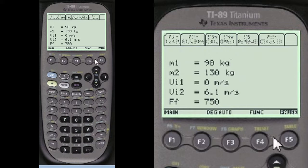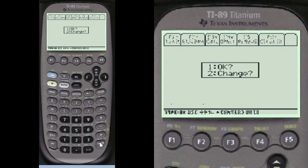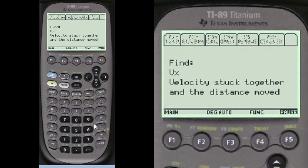I always show you what you've entered. You can check it and change it if you want. If you've made a mistake, I say it's okay. And we're going to find Vx, which is the total velocity of the two people locked together.